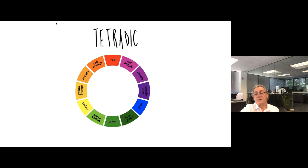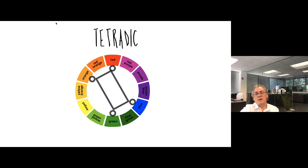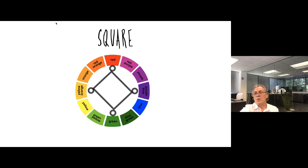And here we have 20 possibilities of variations. And the last scheme is the square scheme which is very similar to the rectangle, but with four colors spaced evenly around the color circle.